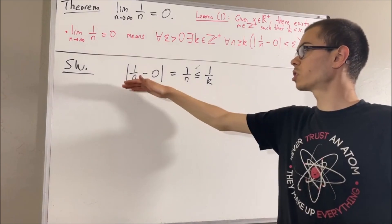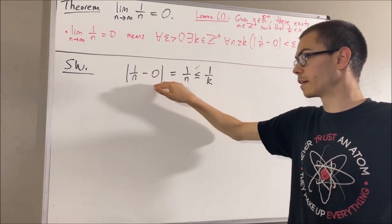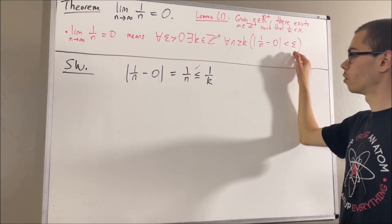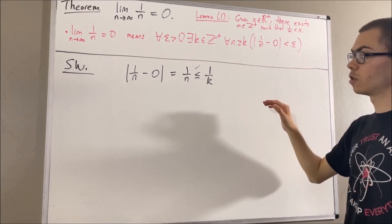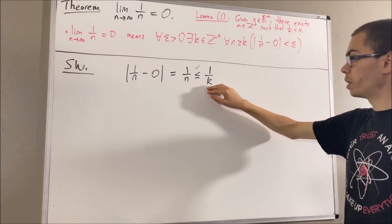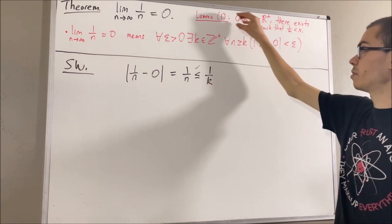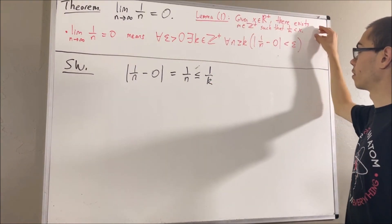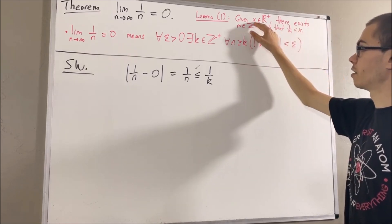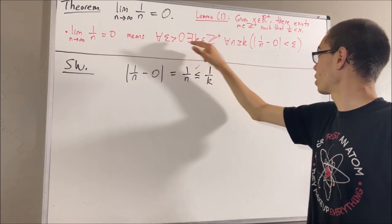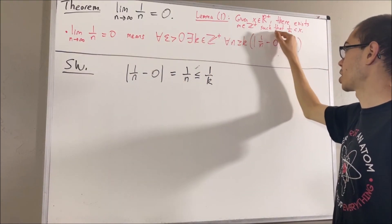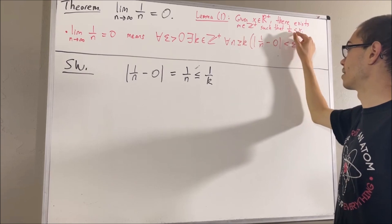Now, remember, we ultimately want to show that this thing is less than epsilon. We could ask ourselves, where are we going to get k from? Well, we could obtain k by using this lemma. If we take our positive real number x to be epsilon, there exists a positive integer m such that 1 over m is less than epsilon.